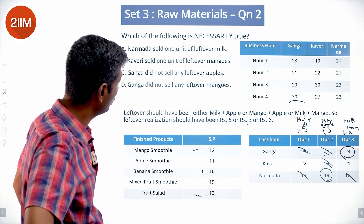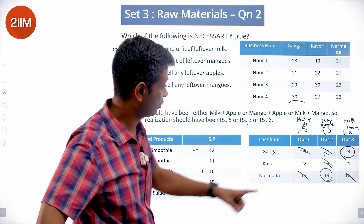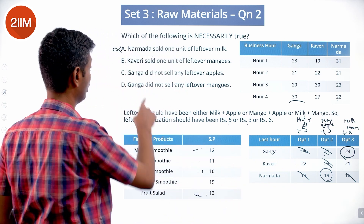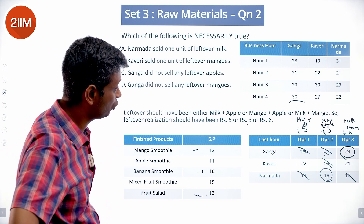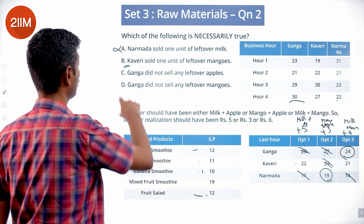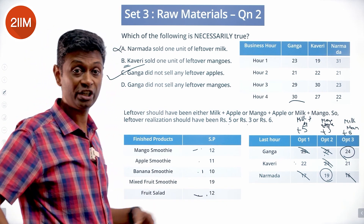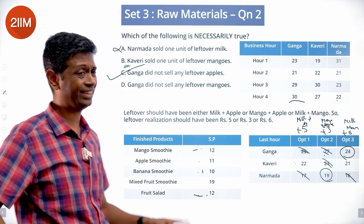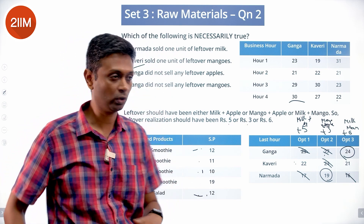For the question about what is necessarily true: Narmada sold leftover mango and apple, not milk — so option A (Narmada sold leftover milk) is not true. Kaveri may have sold milk plus apple or milk plus mango, so option B (Kaveri sold leftover mangoes) is not necessarily true. Ganga sold milk and mango as leftovers — so option C (Ganga did not sell any leftover apples) is necessarily true. Option D (Ganga did not sell leftover mangoes) is false. Answer: C.